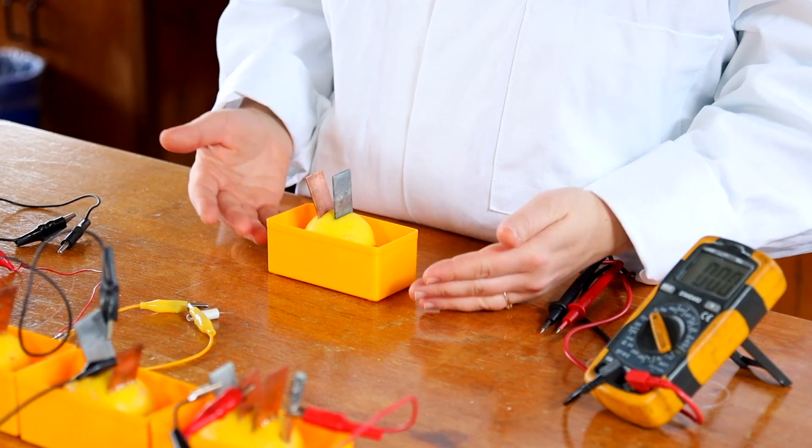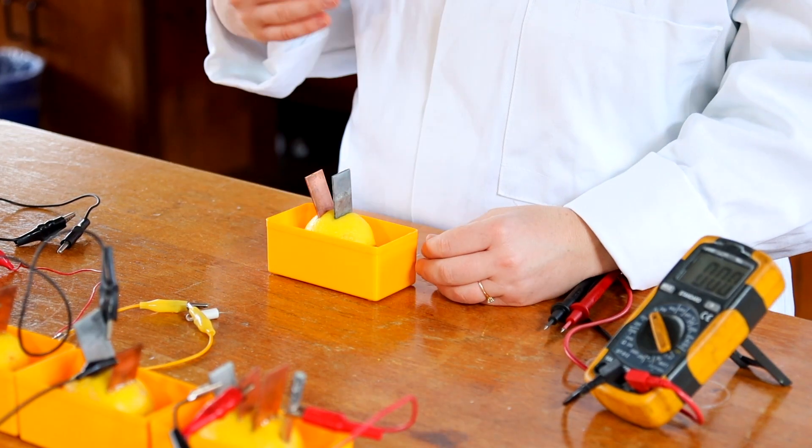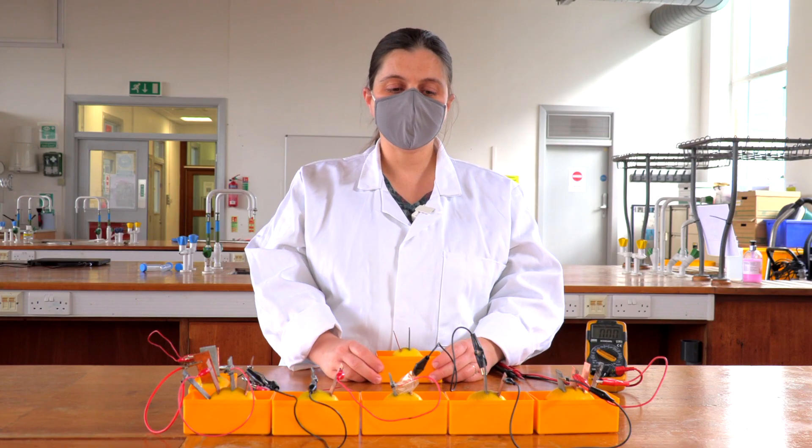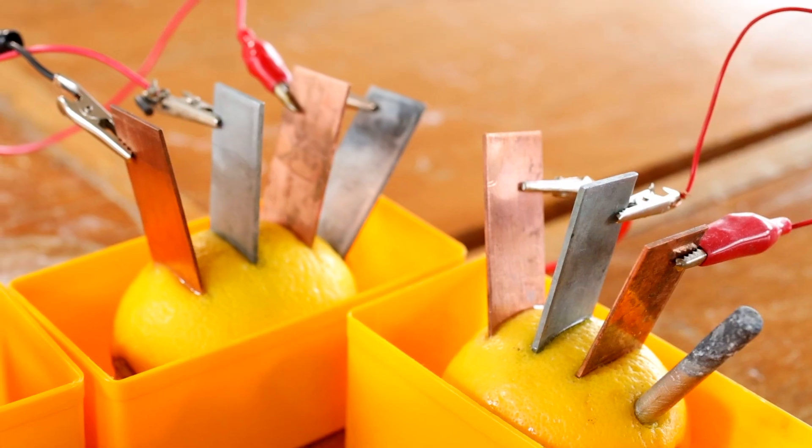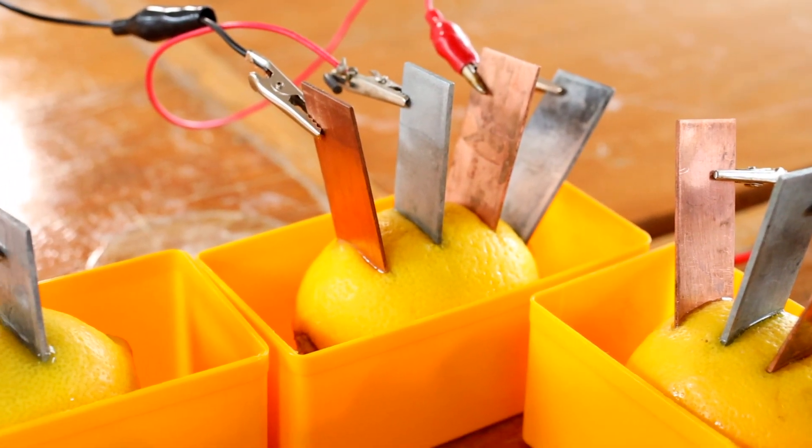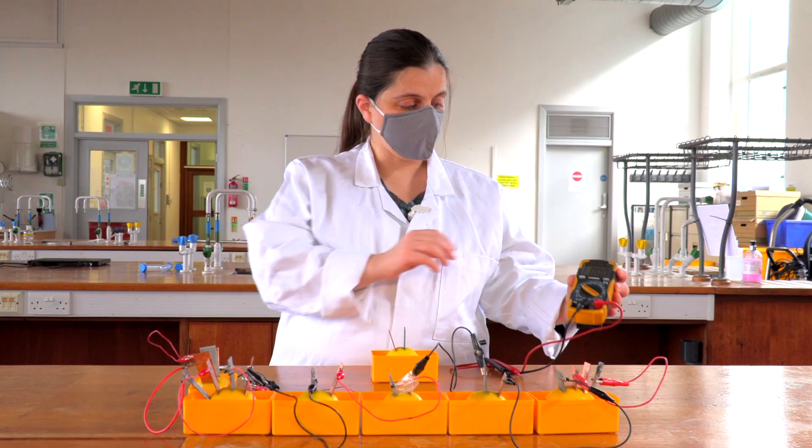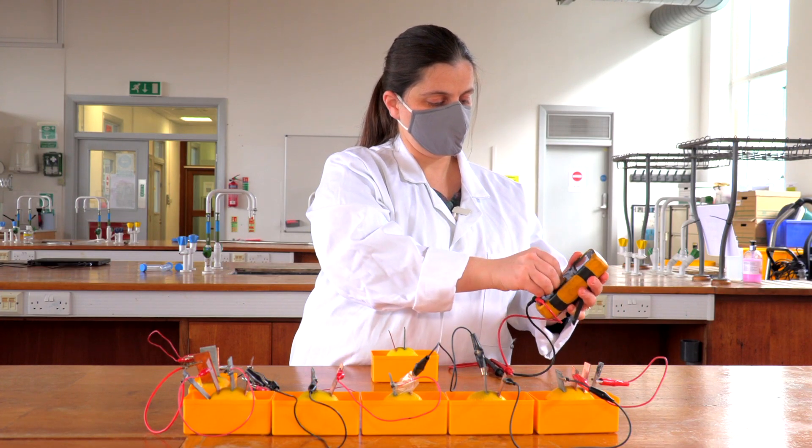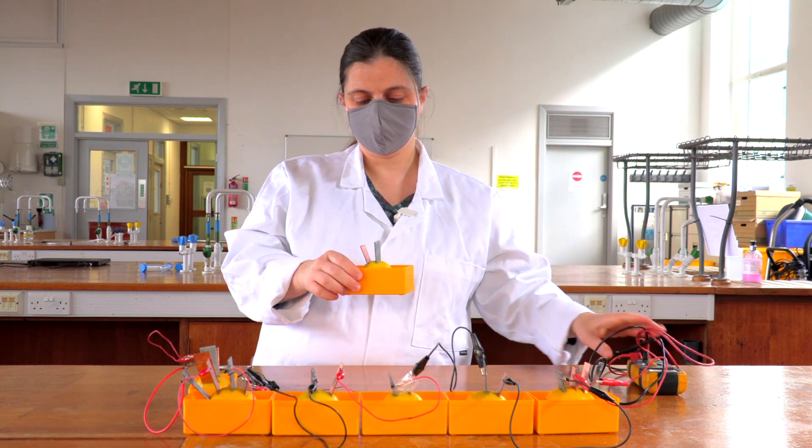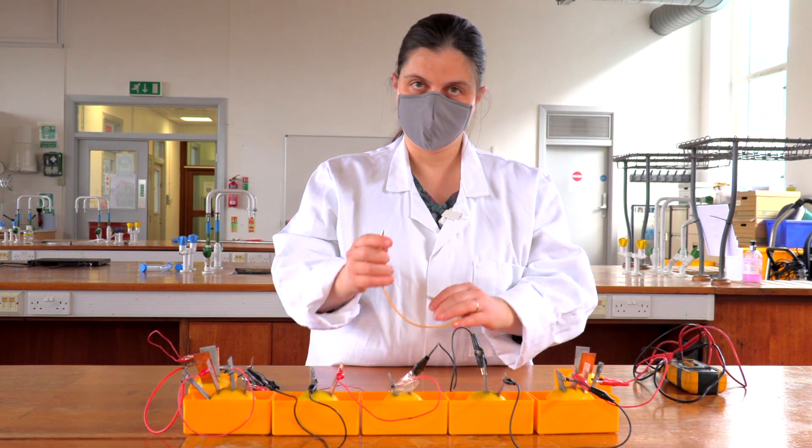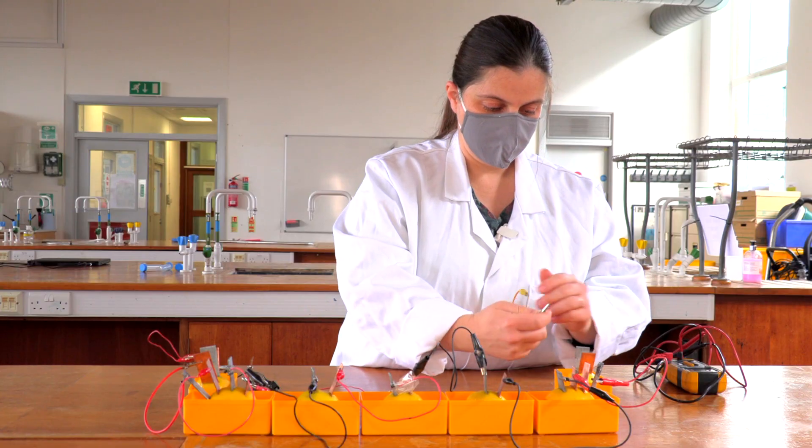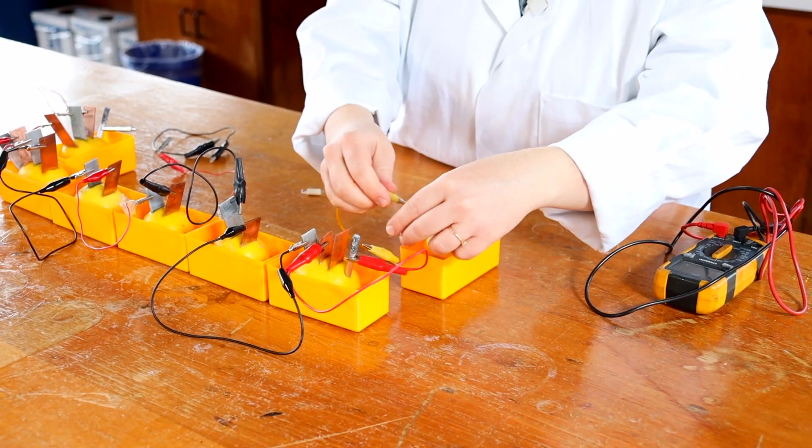Now, if one volt is not enough to power our light bulb, we can connect many batteries like this or many lemons in series to get higher voltage. So I will add my lemon battery to a series of lemon batteries like these.